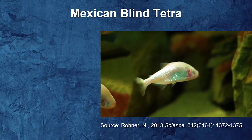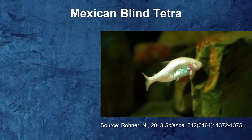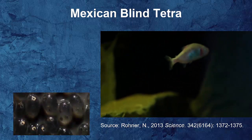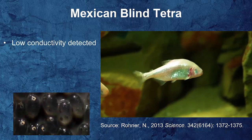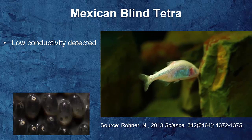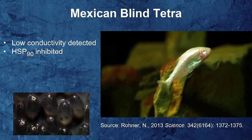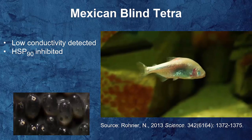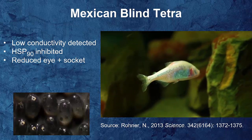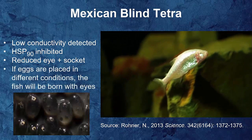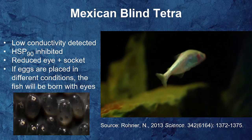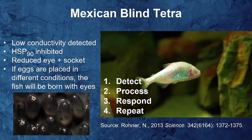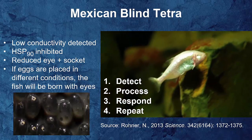Have you ever heard of a blind cave fish? These are fish that don't have any eyes. Scientists discovered that the eggs, when in the water, detect the conditions around them — in this case, conductivity. If it's low conductivity, they inhibit or produce less of certain proteins, which results in no eyes. But if you take those same eggs and put them in different conditions, the fish will be born with eyes. Detecting, processing, responding, and repeating.